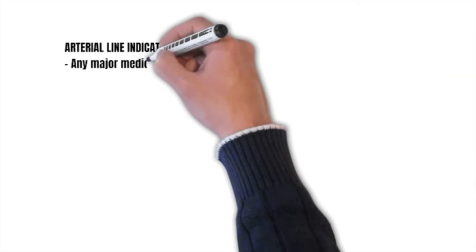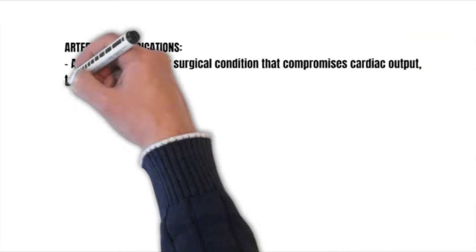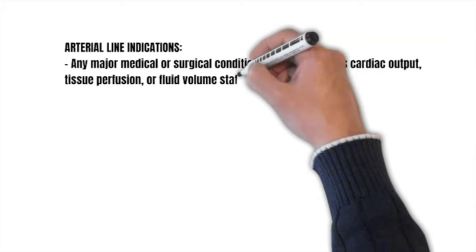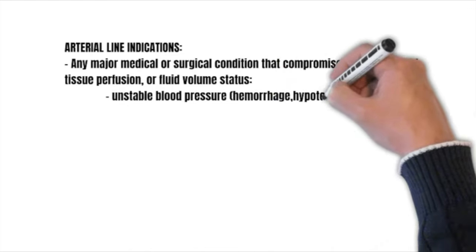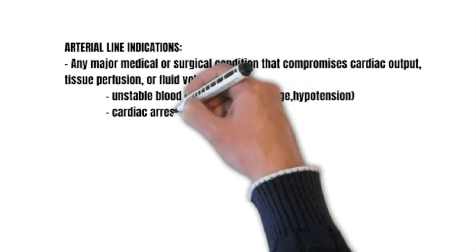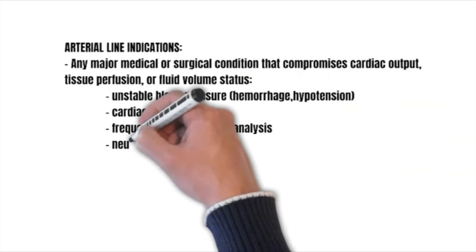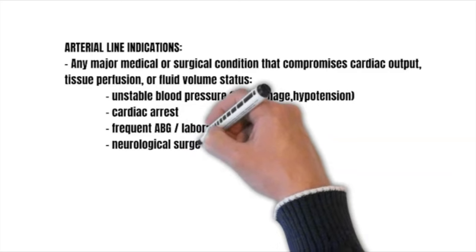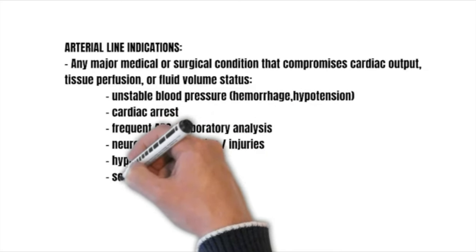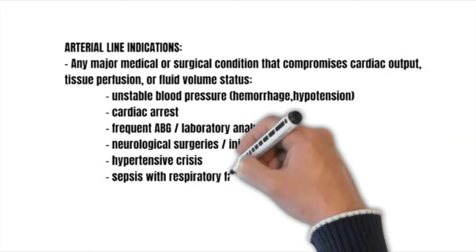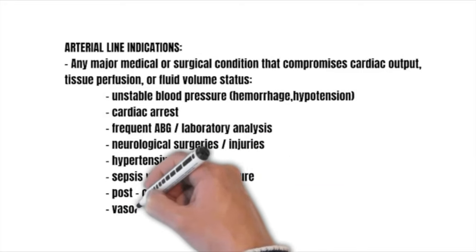Arterial line indications: any major medical or surgical condition that compromises cardiac output, tissue perfusion, or fluid volume status. Unstable blood pressure like hemorrhage and hypotension, cardiac arrest, frequent ABG or laboratory analysis, neurological surgeries or injuries, hypertensive crisis, sepsis with respiratory failure, post-operative monitoring, and vasoactive medication infusion.